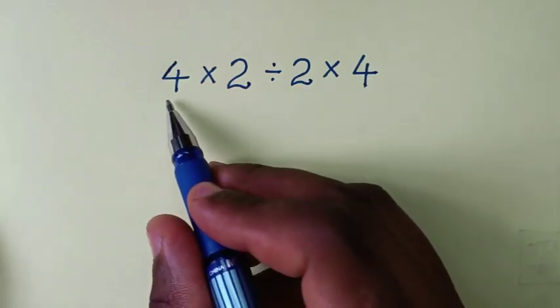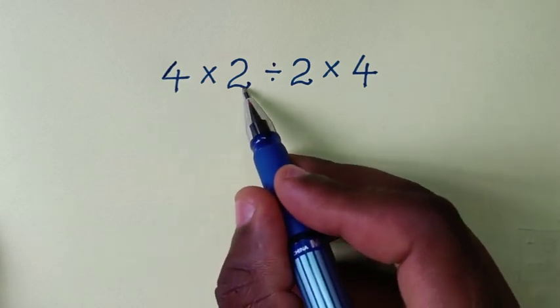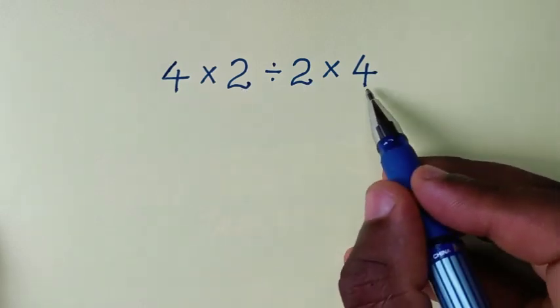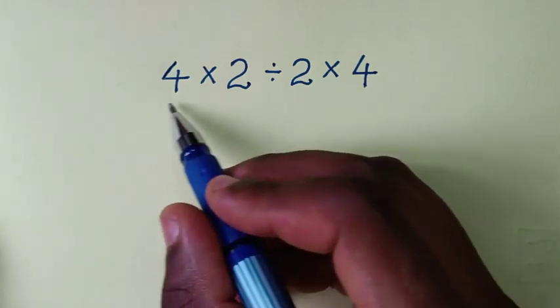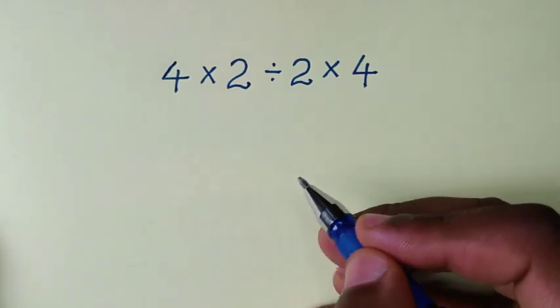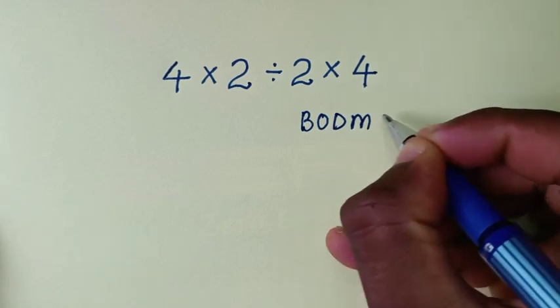Hello, you are welcome to solve this math problem: 4 × 2 ÷ 2 × 4. Now, let's solve this problem using the BODMAS rule.